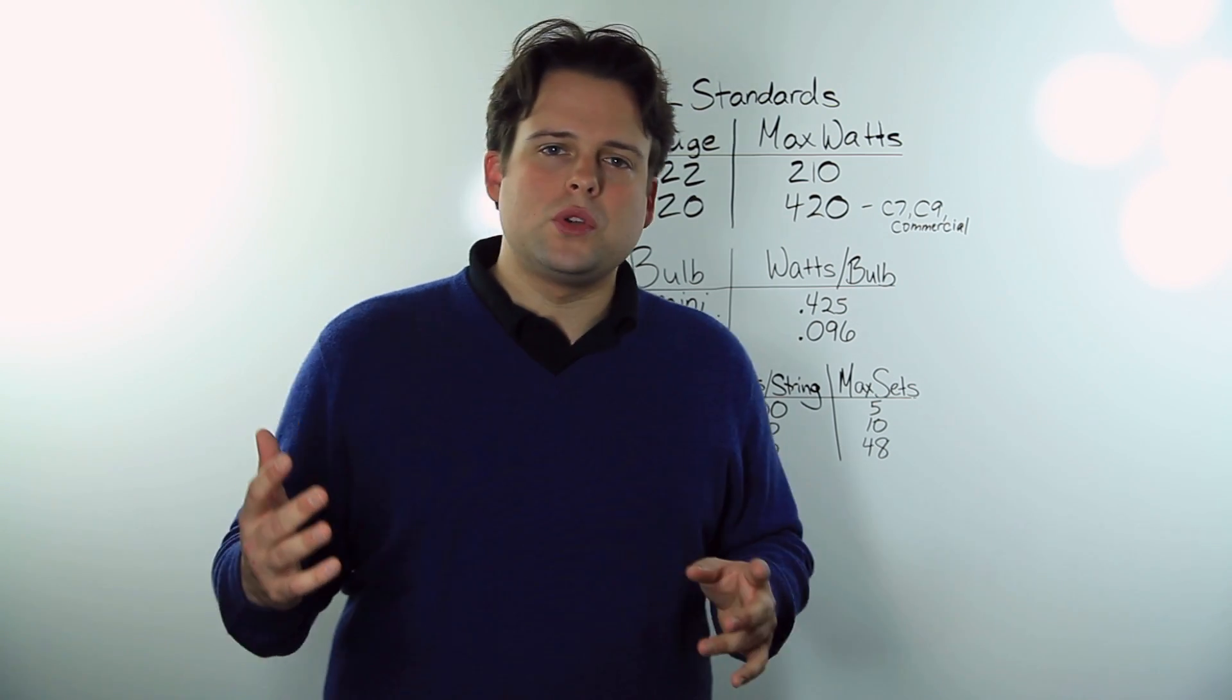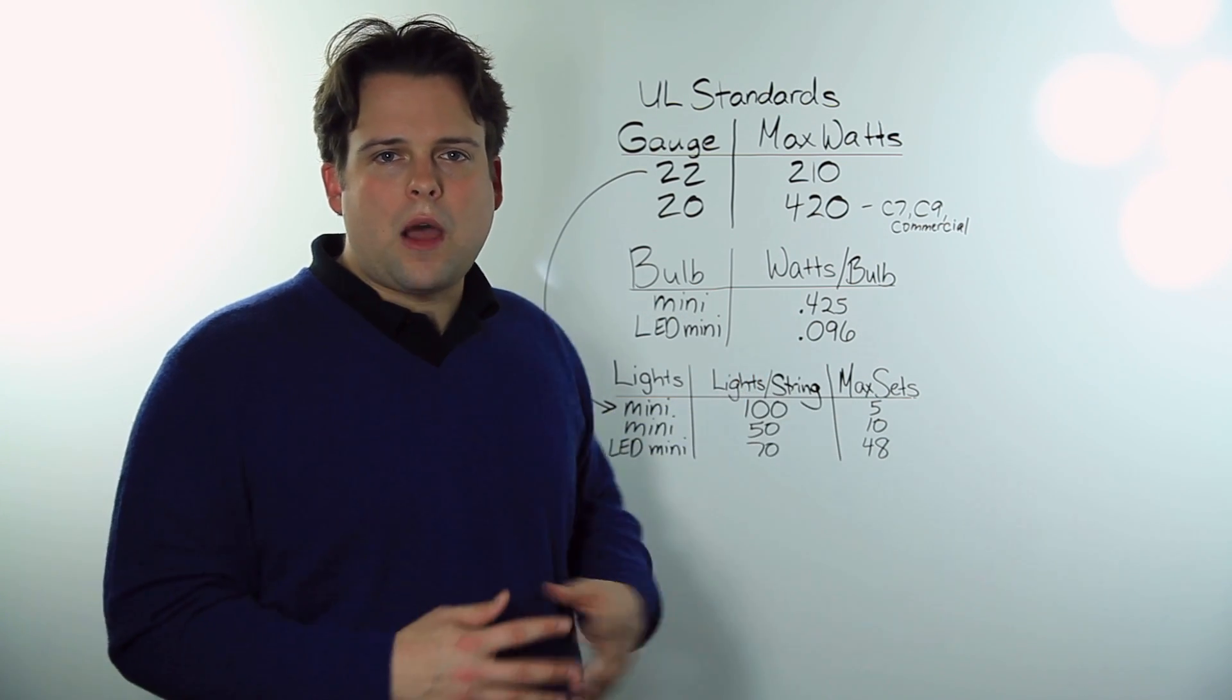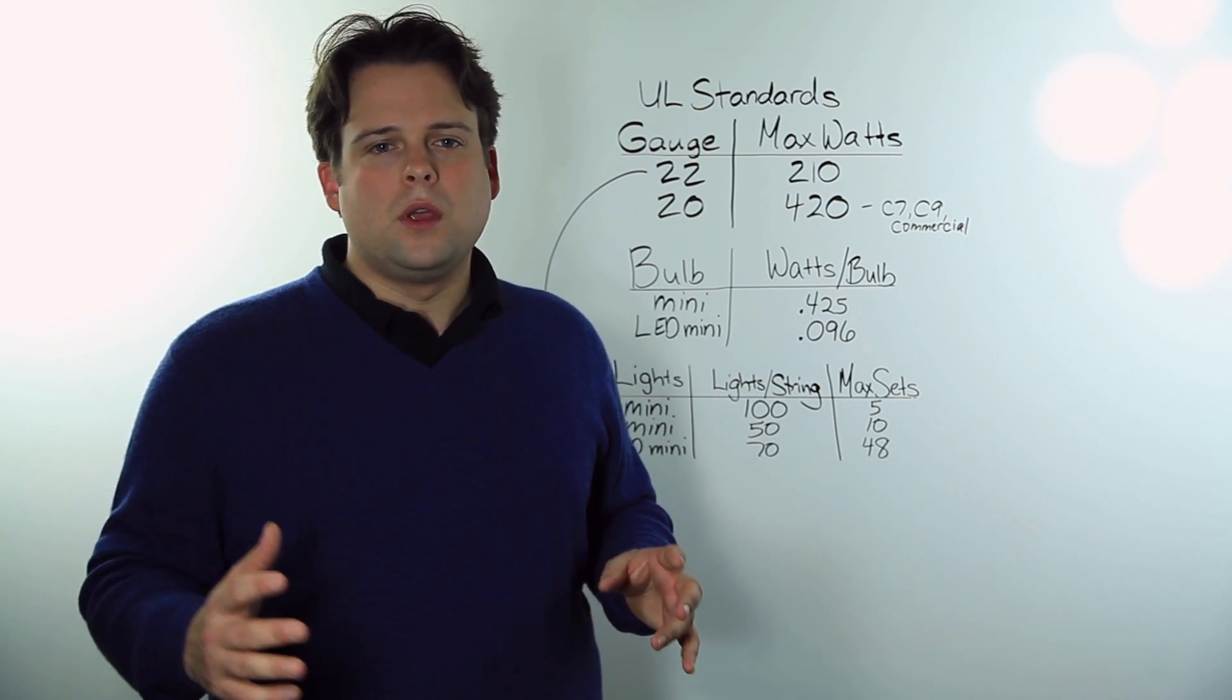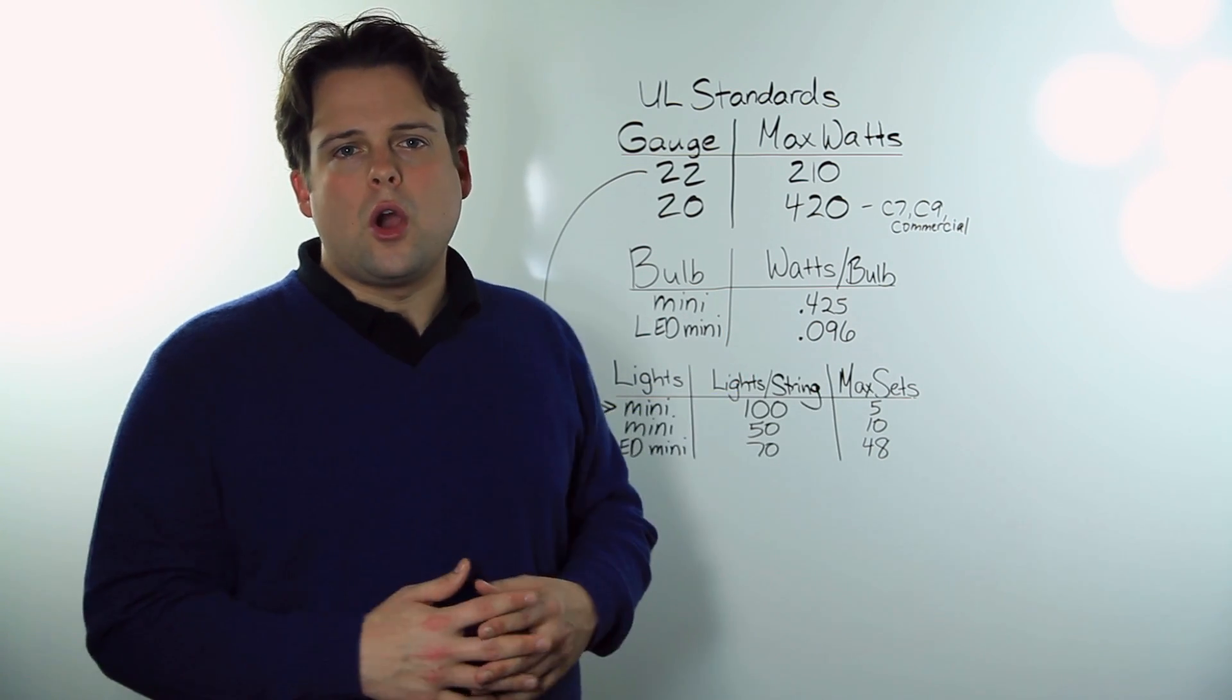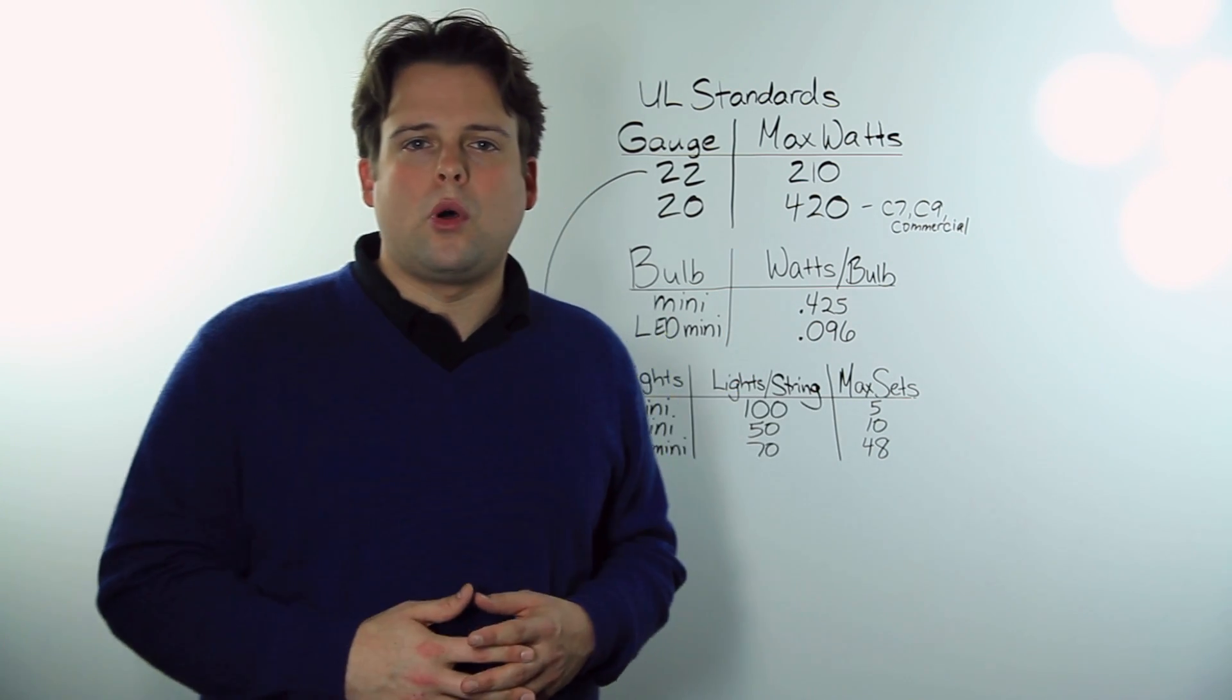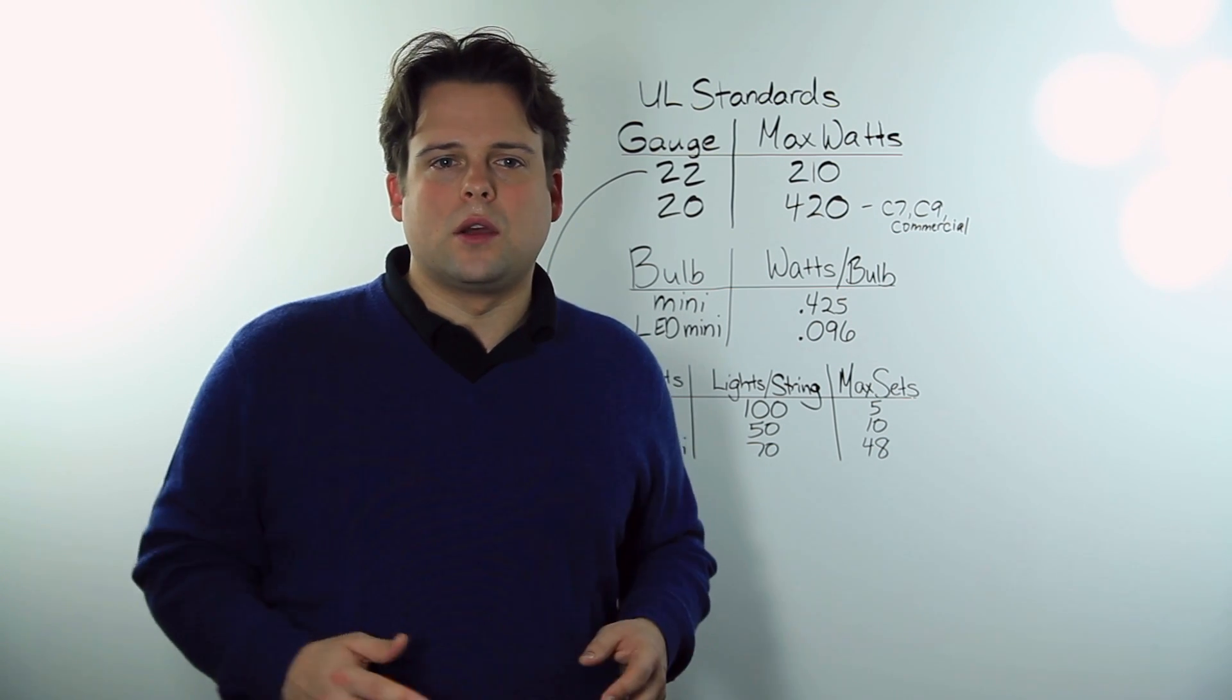To give you an example, most incandescent mini lights will use 0.425 watts per bulb, whereas LED mini lights use as little as 0.096 watts per bulb on a pre-lamp string, regardless of the size of the bulb.